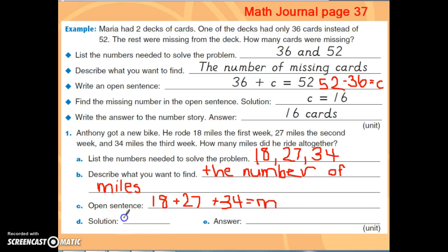My solution would be M equals. So my variable equals. And I would put the answer to this problem. So whatever I get when I add 18 plus 27 plus 34, my sum would go here.